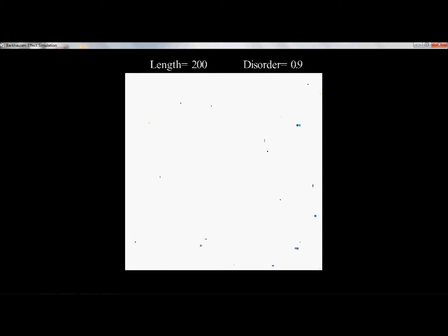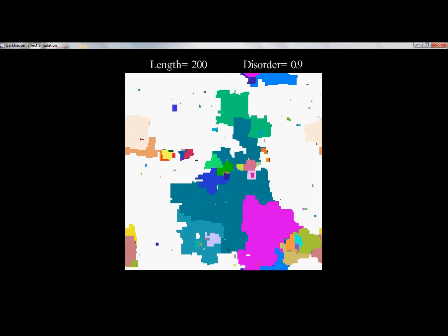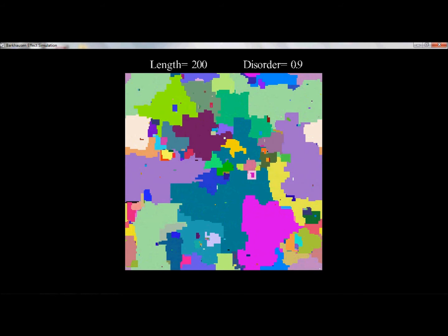At the critical disorder of 0.9, interesting things begin to happen. We see all sizes of avalanches, from the tiny isolated ones all the way to the spanning avalanches, or infinite avalanches that cover the entire region.